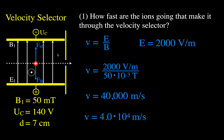Ions traveling faster than 4.0×10⁴ m/s will have a greater magnetic force than electric force and be deflected downward. Ions traveling slower than 40,000 m/s will have a smaller magnetic force, so the electric force dominates and they are deflected upward, striking the upper barrier. Only those traveling at exactly this speed have the electric and magnetic forces equal to each other, so they fly straight through the velocity selector.